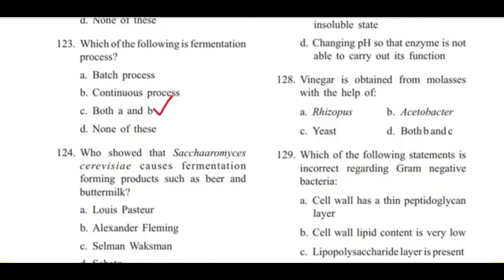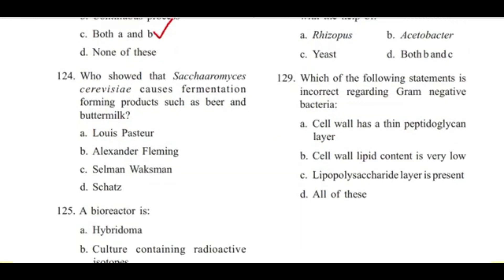Question 124: Who showed that Saccharomyces cerevisiae causes fermentation forming products such as beer and buttermilk? — Louis Pasteur, Alexander Fleming, Salman Waksman, or Chard? Answer is A, Louis Pasteur.